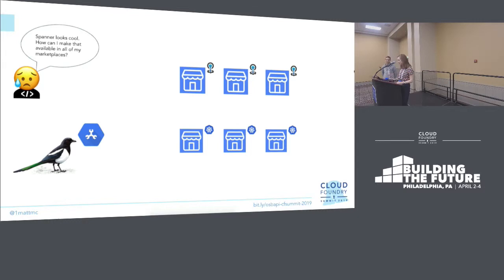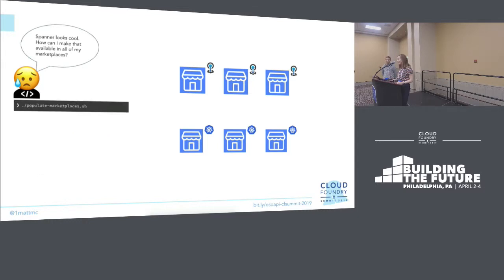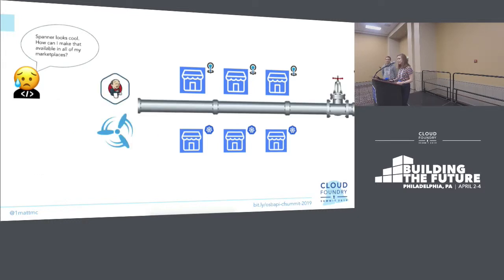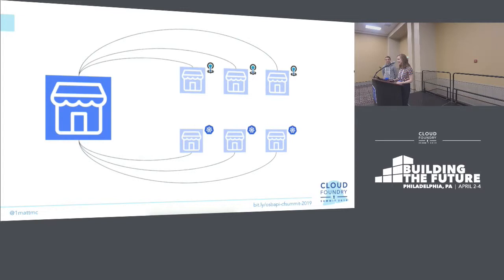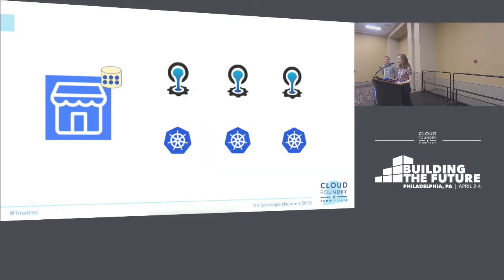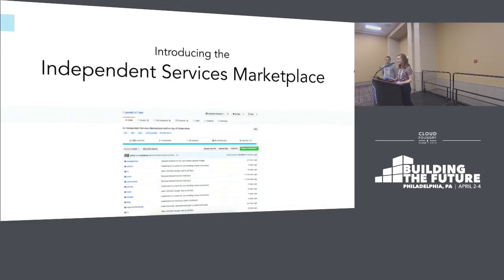If you want to make a brand new shiny service available into each marketplace, having to do that isn't very simple — you don't just do one thing, you actually have to write a script or build a pipeline. And as you have more and more platforms and more and more marketplaces, you're having to manage more and more different places for things to be available for your tenants. So what we'd like to talk about today is pulling the marketplace out of the platform into one thing called the Independent Services Marketplace, or ISM.